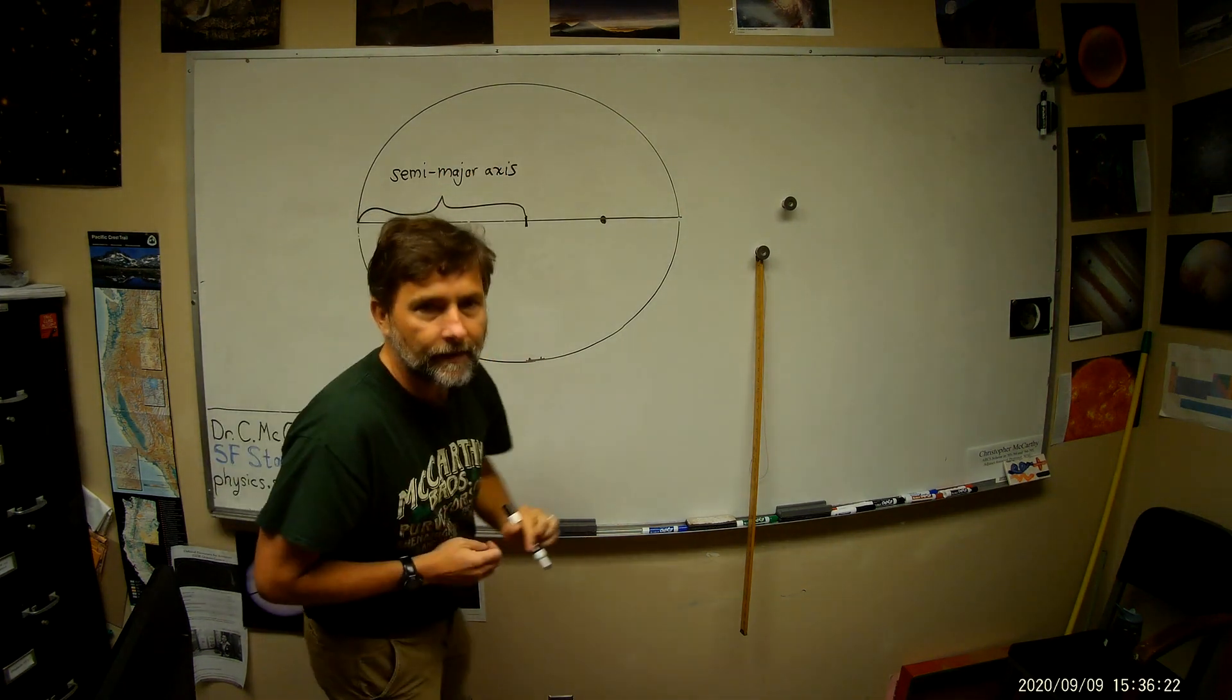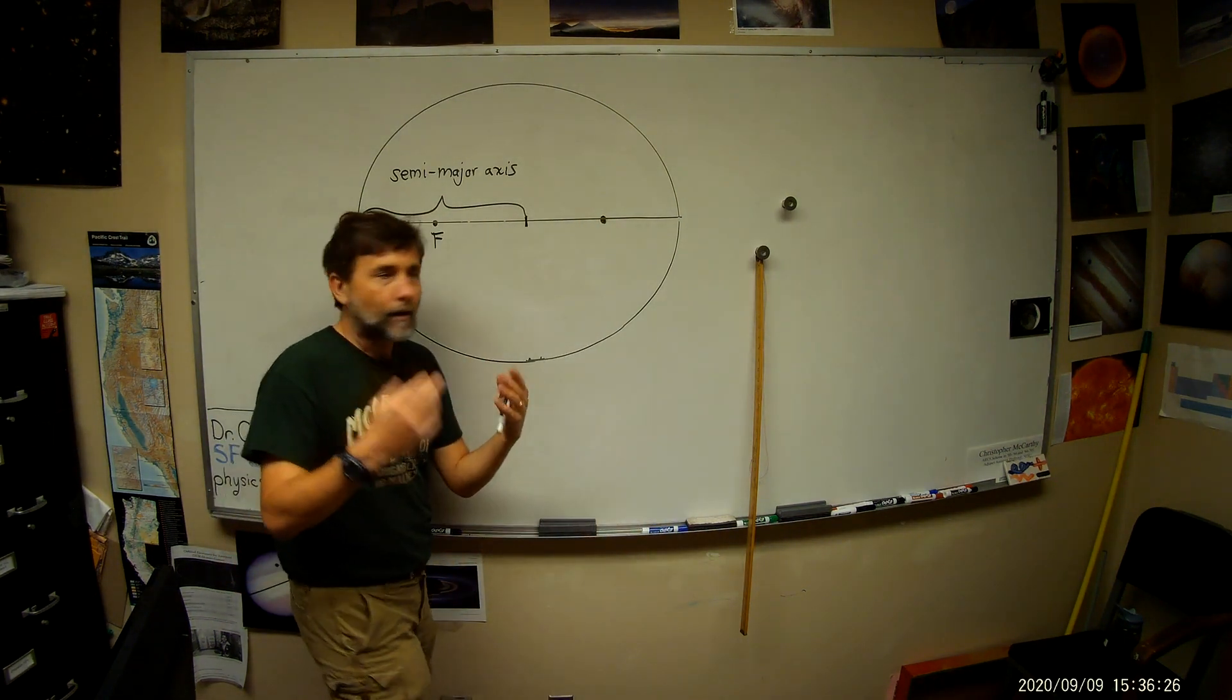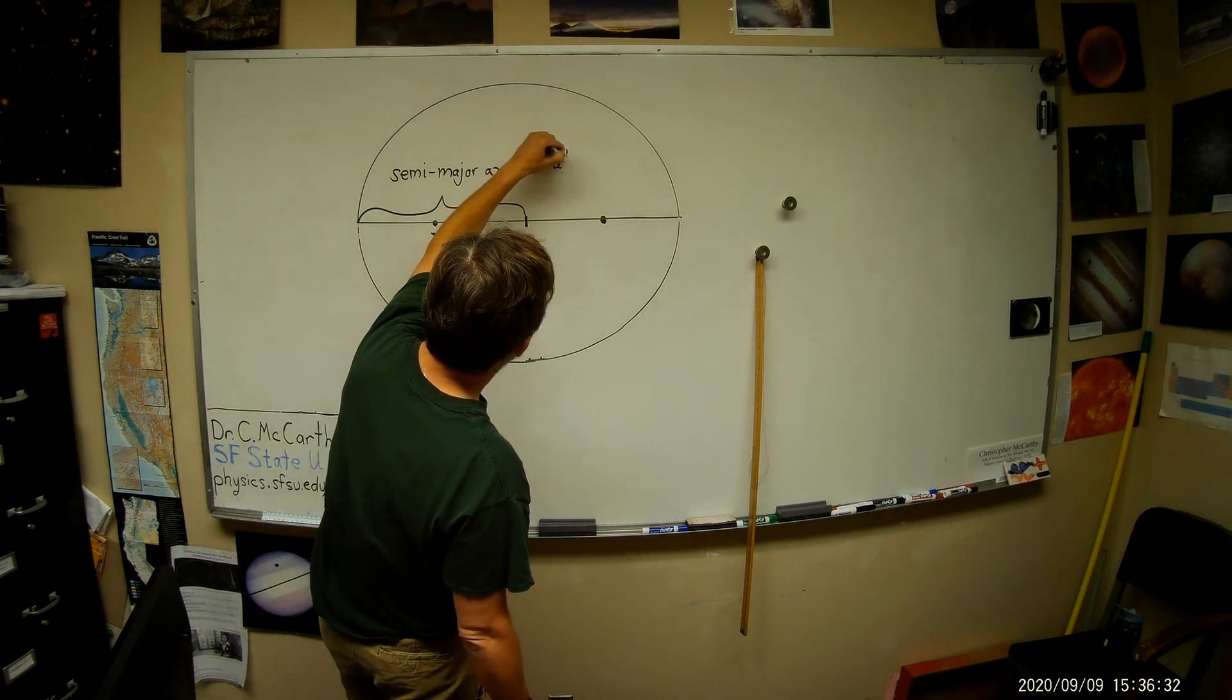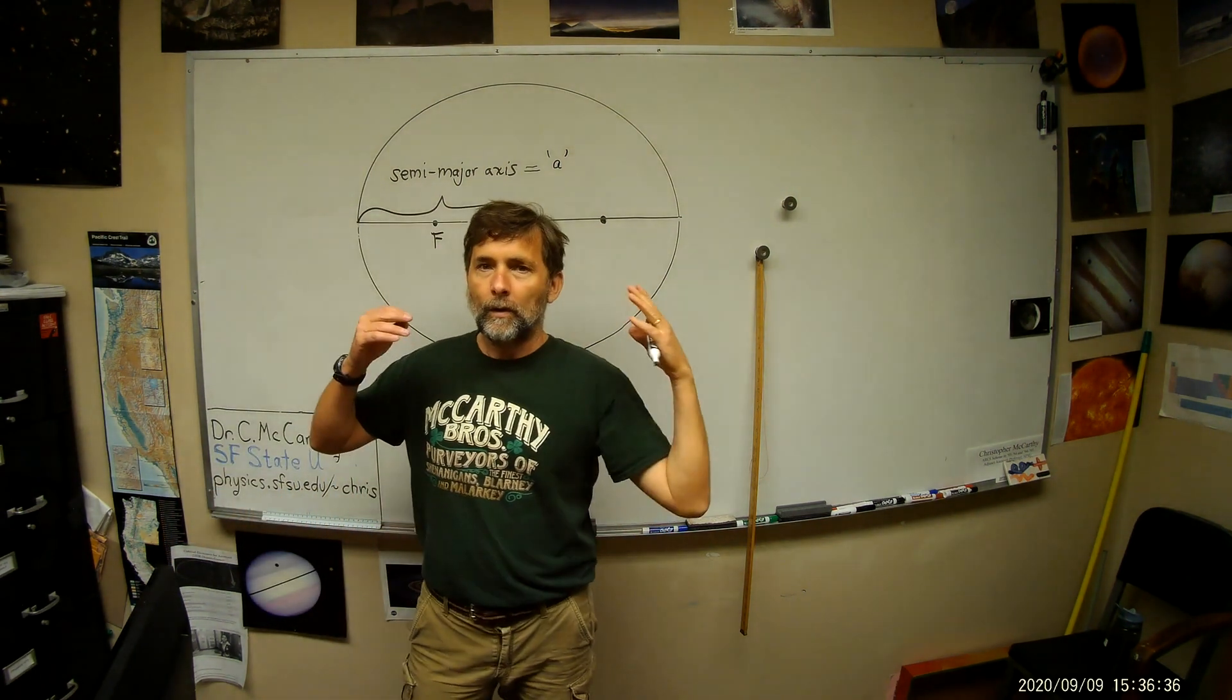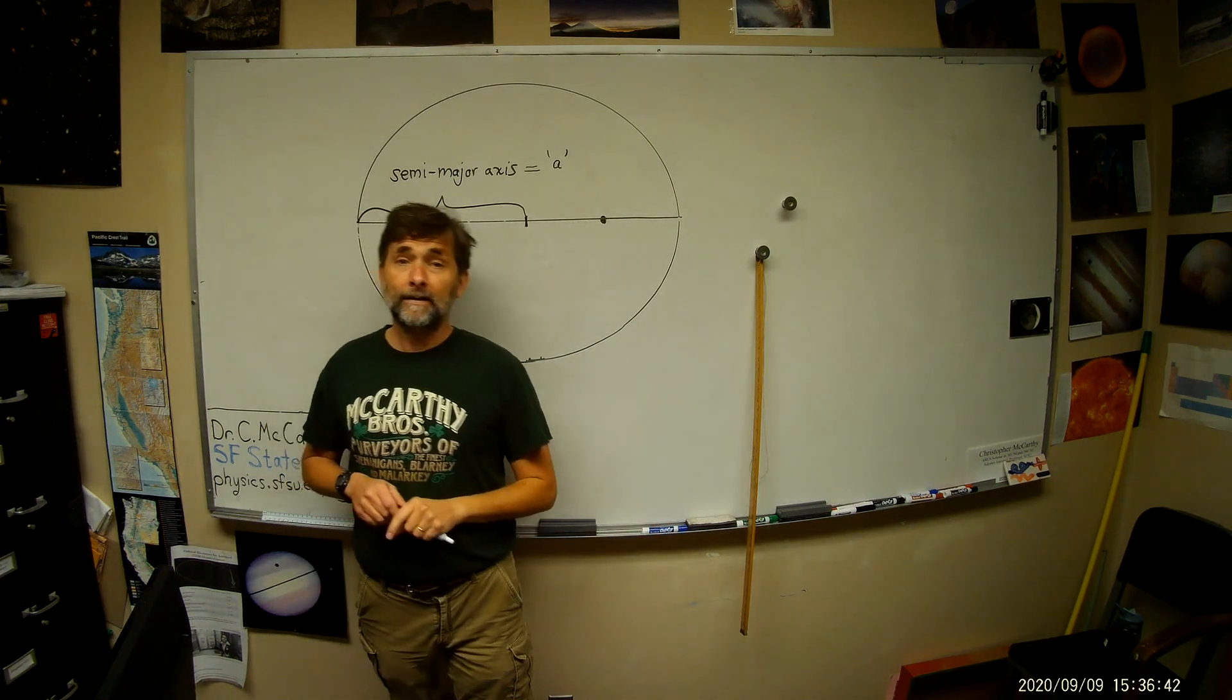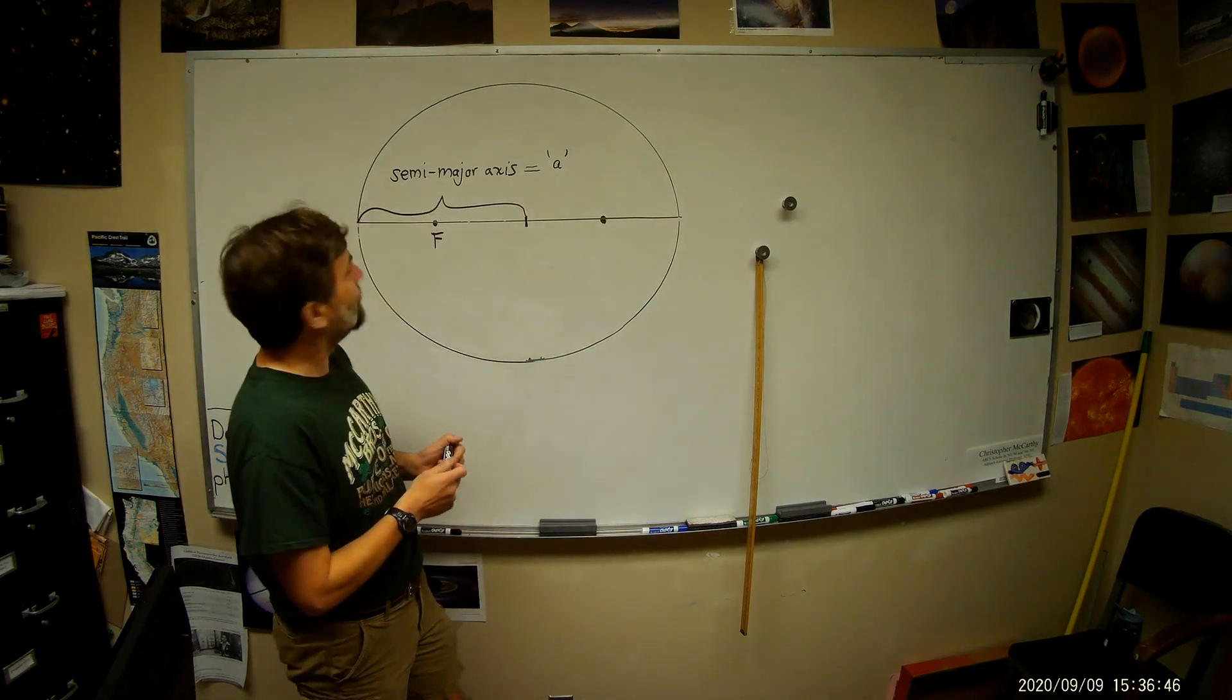That's kind of a big word, but you can just think of it as the radius of an ellipse. And instead of R, we'll shorten this to just the letter A. A for axis. So when we're talking about ellipses, we talk about how big they are in terms of the semi-major axis. Each of the planets in our solar system has a different semi-major axis.